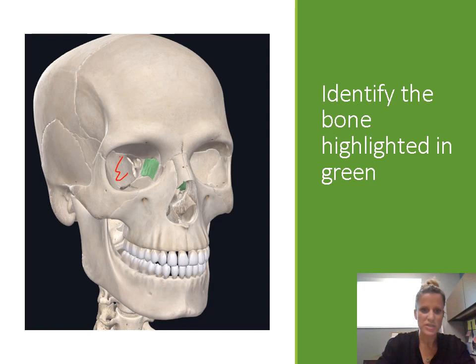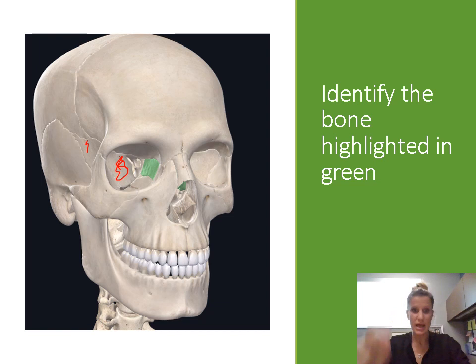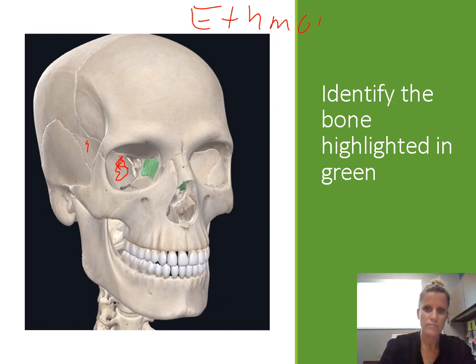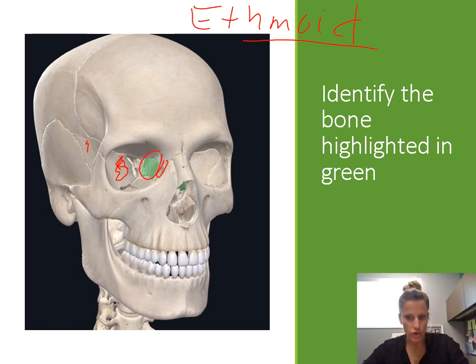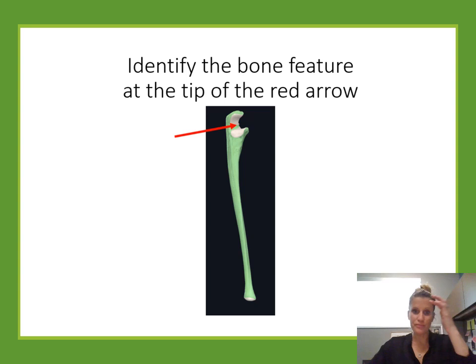The sphenoid bone was back there. The next bone that forms the medial aspect of the orbit, just inside the eye, is the ethmoid bone. There is another really tiny bone right in front of that — if it was just a tiny area highlighted right there, just in front of the ethmoid, that would have been the lacrimal bone. The ethmoid is a little bit bigger towards the back, and then right in front of it is the lacrimal bone.